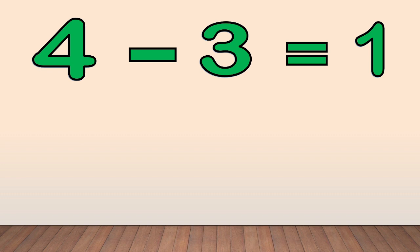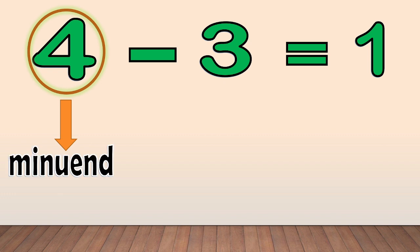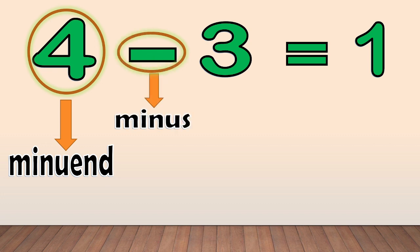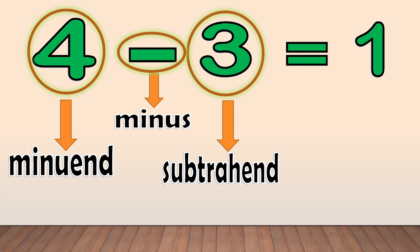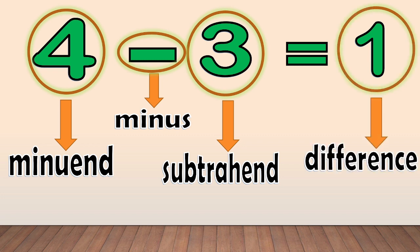Let's look at the number sentence: 4 minus 3 equals 1. The number 4 here is what we call the minuend — that is the bigger number. The symbol that you will use here is minus. The smaller number is called the subtrahend — that is the number that you take away. The answer in subtraction is called the difference.